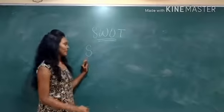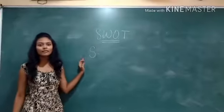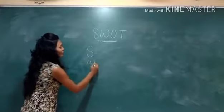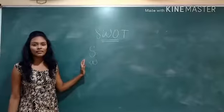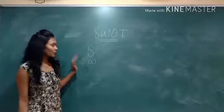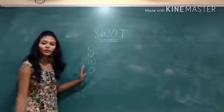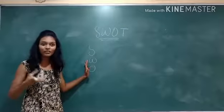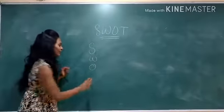S stands for strengths. Strengths are things which the company does well. W stands for weaknesses. Weaknesses are things which the company does not do well. O stands for opportunities. Opportunities are conditions which favor the strengths of the company.